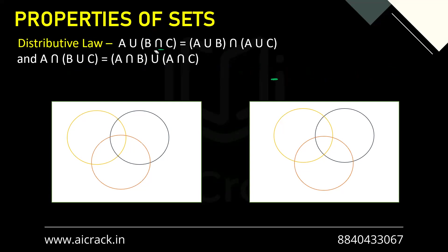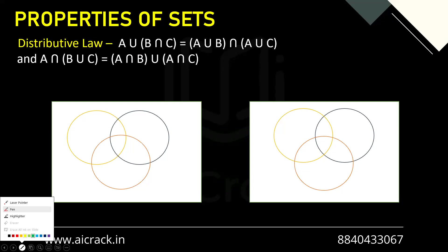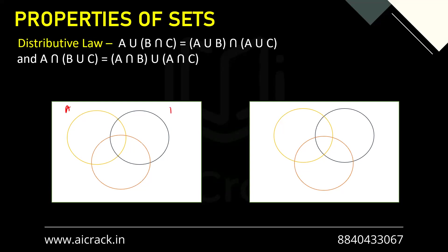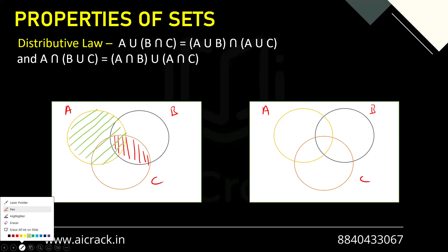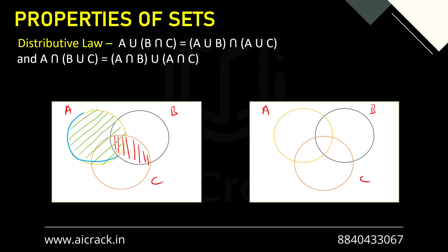Now let's look at the distributive law with the help of Venn diagrams. We have A union (B intersection C). We have sets A, B, and C. Firstly, we find B intersection C, which gives us a particular region. Then we do the union with A — marking all elements of A. When we take the union of A with (B intersection C), we get a specific combined region.